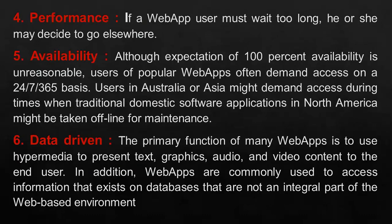Coming to the fourth point, performance. Performance is an indication of the responsiveness of the system to execute a specific action in a given time interval. It can be measured in terms of latency and throughput. Latency means the time taken to respond to any event, and throughput is the number of events that take place in a given amount of time. If web app users must wait too long, then they may decide to go elsewhere.